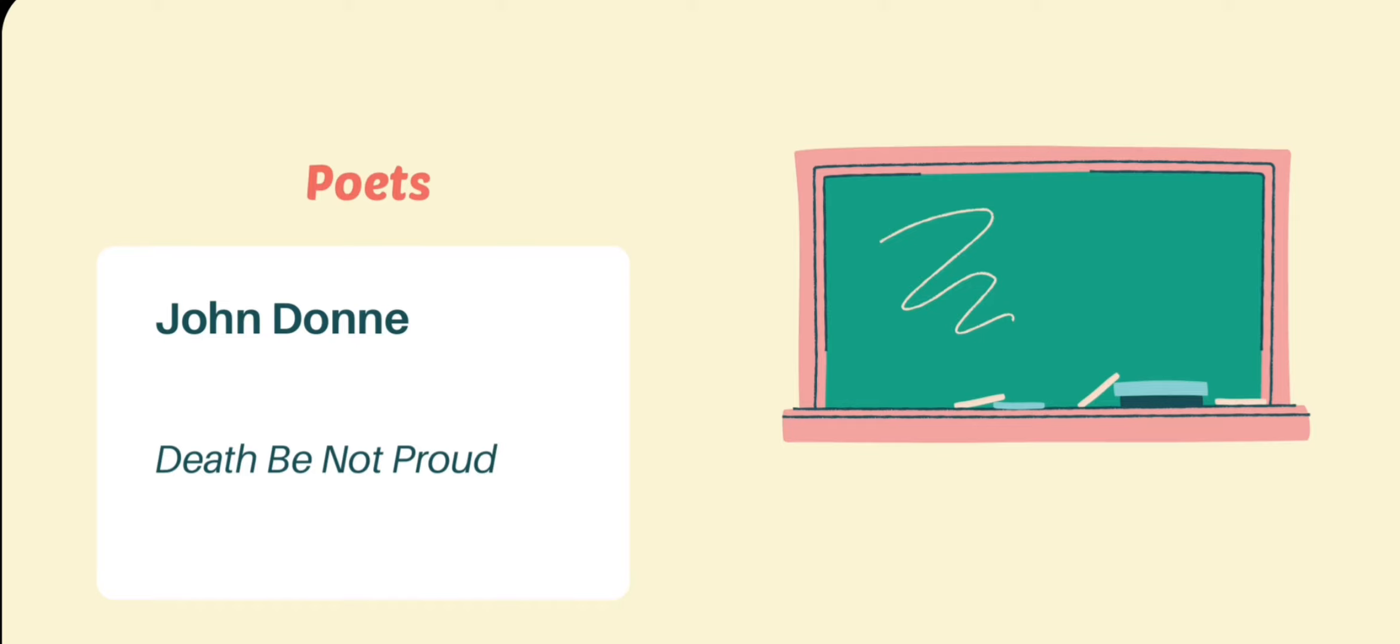Death, thou shalt die. You have read this poem in your compulsory paper in BA first year and I hope you remember it very well because of its paradoxical statements, because of its paradoxical theme. It's difficult to understand how death shall die, but paradox is used because this is the only way in which Donne can come to terms with the difficult Christian idea of life after death.